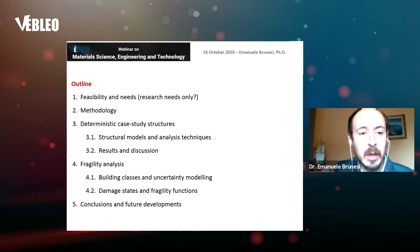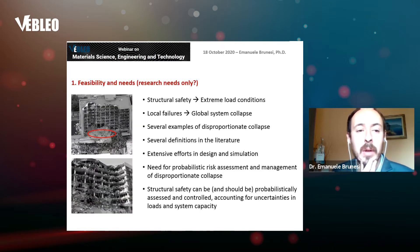This presentation is outlined as follows: feasibility and needs—we have a big question mark here: are there any practical applications for fragility models in this case? And the answer is yes. And then the boring stuff, which is essentially the rest of the study: methodology, deterministic case study structures, fragility analysis split into two main items—building classes and uncertainty modeling, then definition of damage states for derivation of fragility functions or models. Finally, some conclusions and further developments.